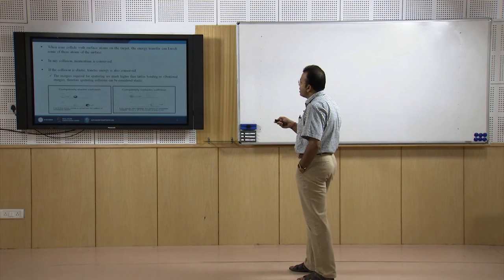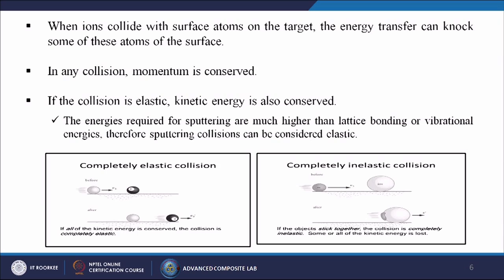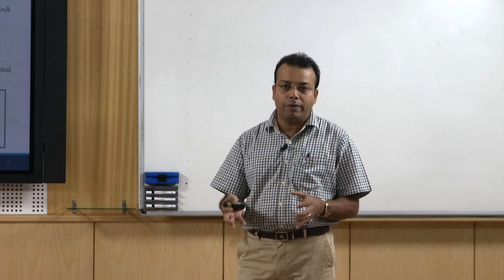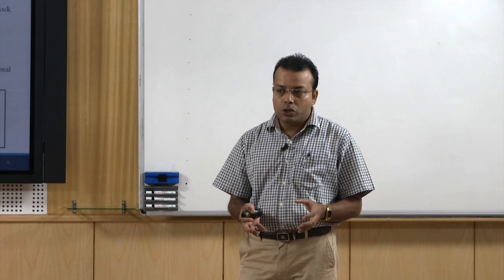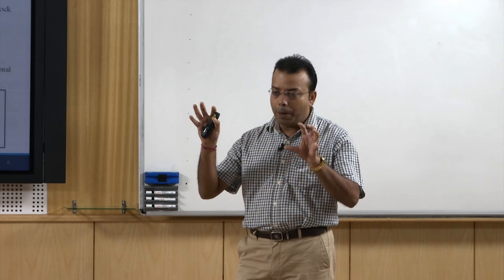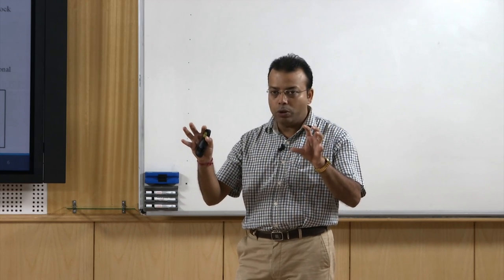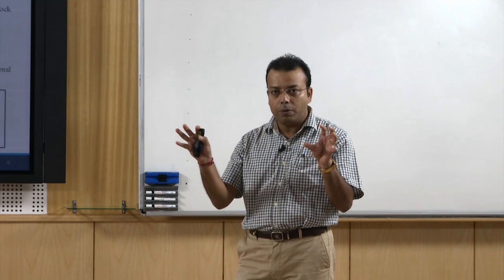When an ion collides with surface atoms on the target, the energy transfer can knock some of these atoms off the surface. In any collision, momentum is conserved; if the collision is elastic, kinetic energy is also conserved. The energies required for sputtering are much higher than the lattice bonding or vibration energies. Therefore, sputtering collisions can be considered elastic — a perfect example of the pool game already described. When the masses of two balls are equal, they generate the same momentum.